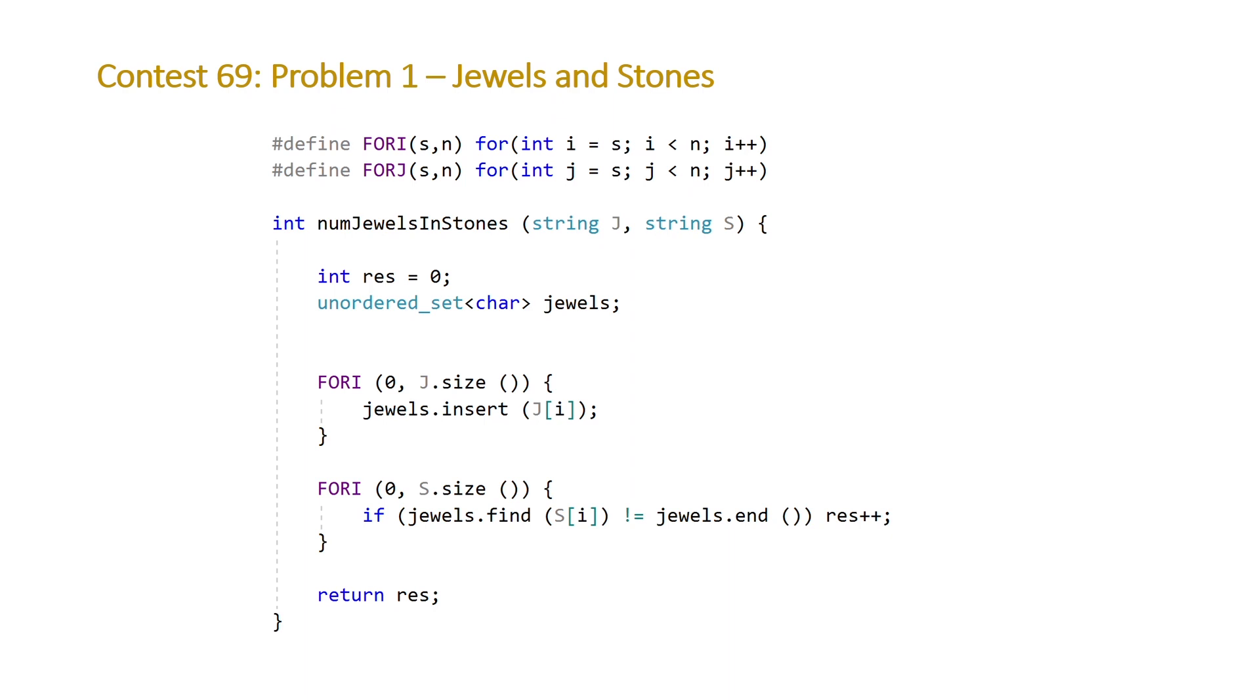We create a second for loop in which we loop over the characters in S, and anytime we find a character in S in our jewels we increment our answer. Because we're using an unordered set, our lookup on this data structure will be constant time. So overall the complexity of this solution is linear.